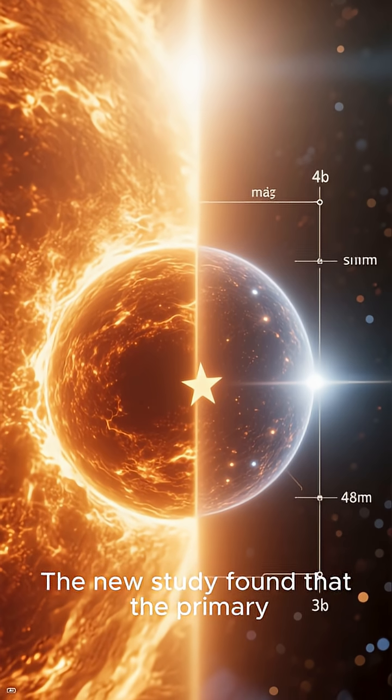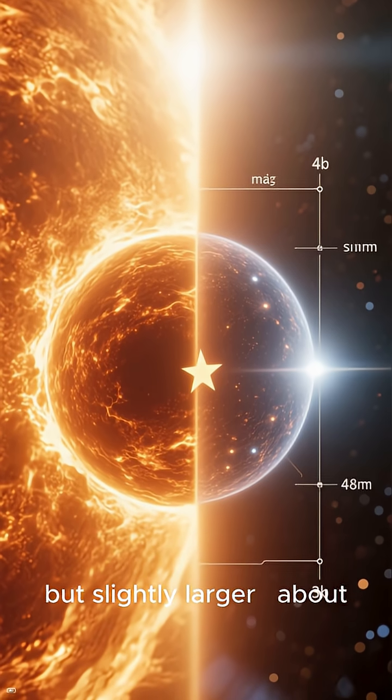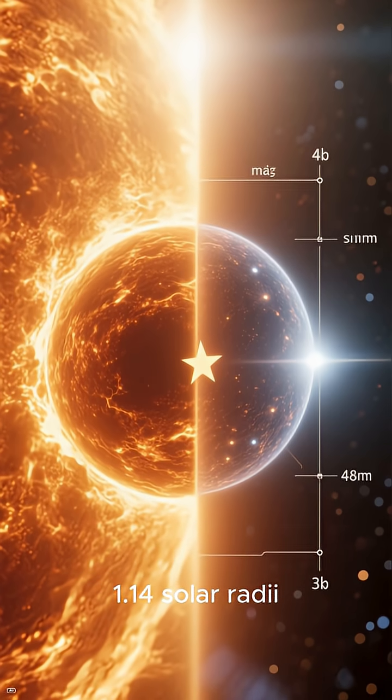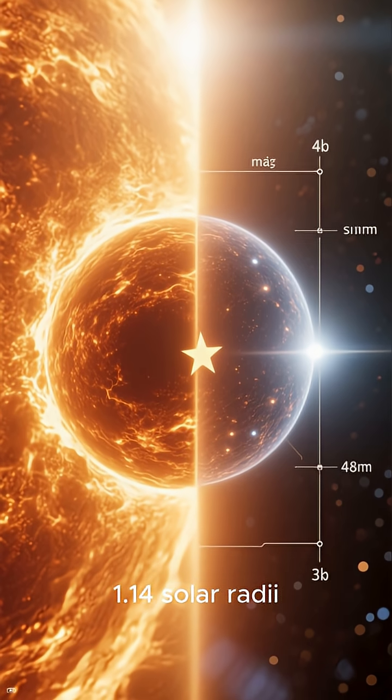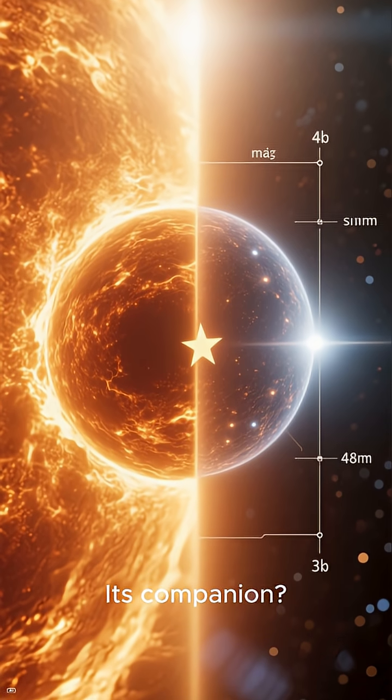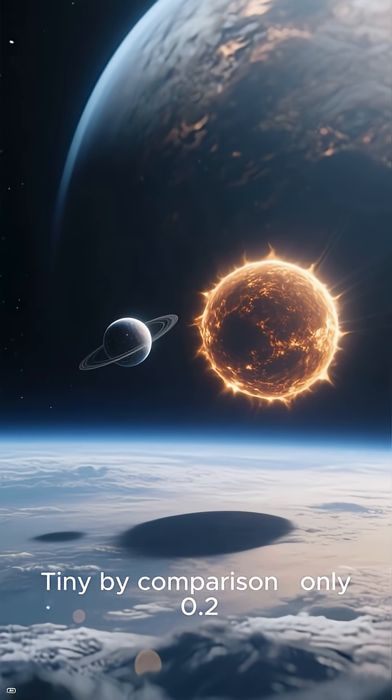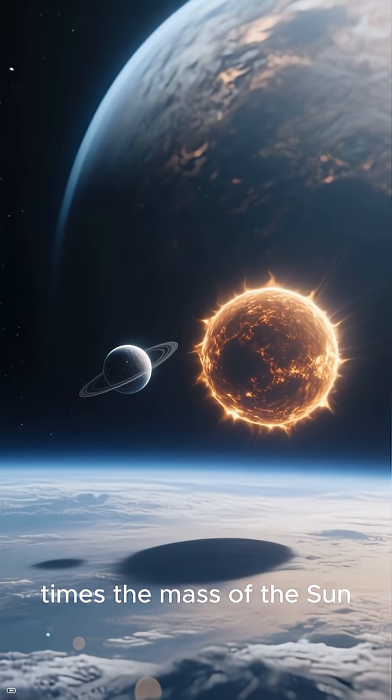The new study found that the primary star is about the same mass as our sun, but slightly larger, about 1.14 solar radii. Its companion, tiny by comparison, only 0.2 times the mass of the sun.